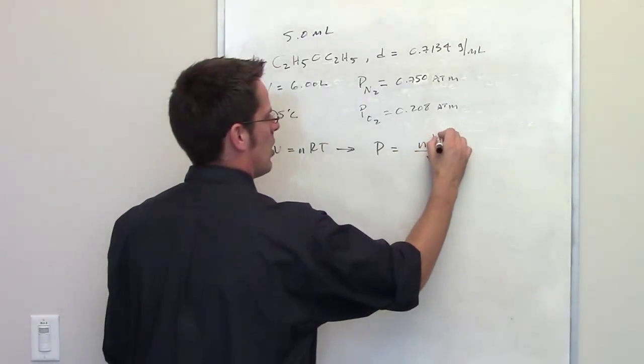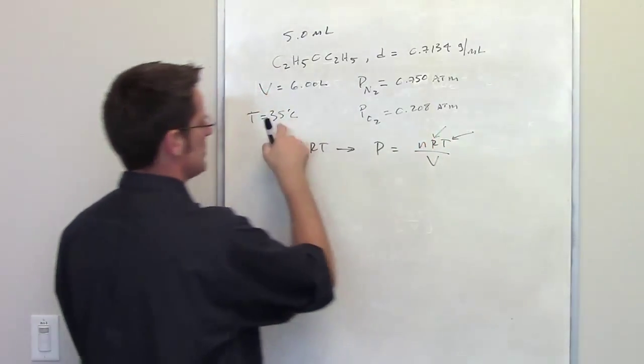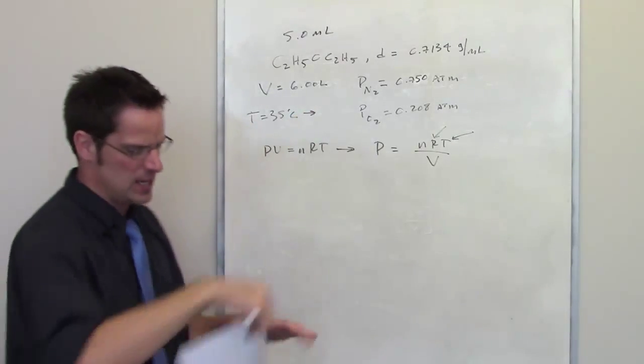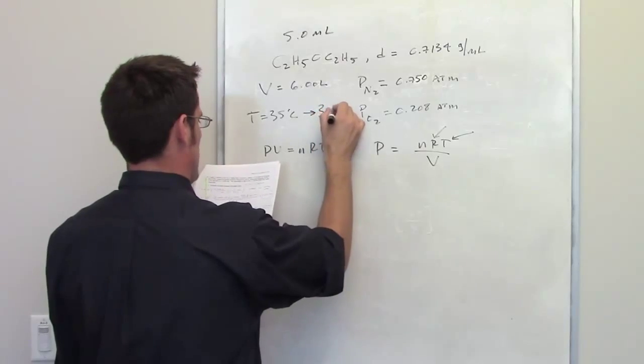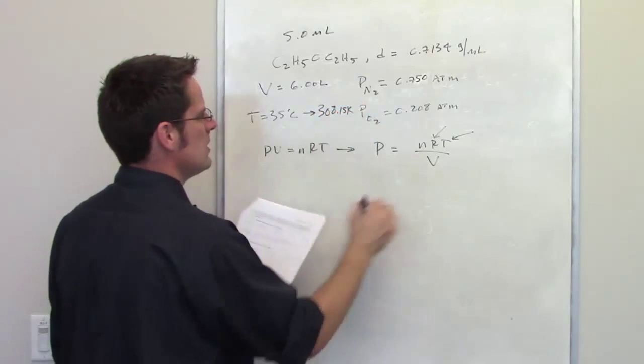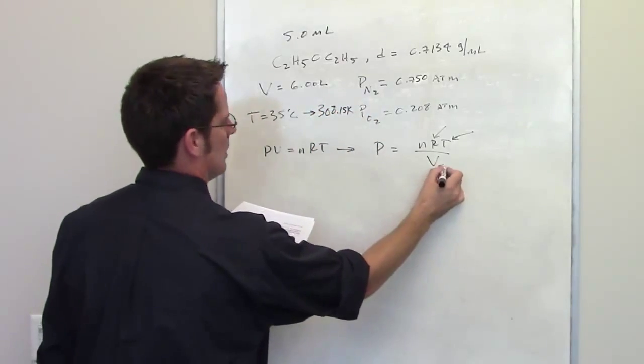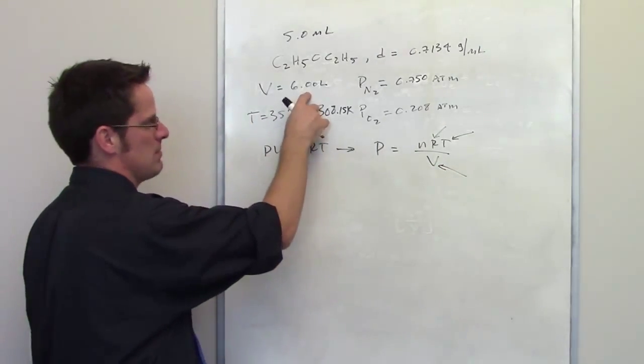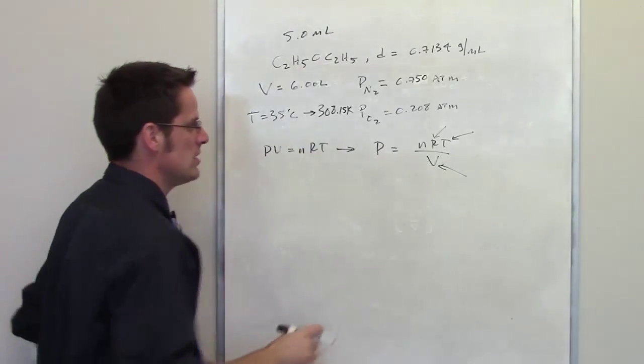We have R the ideal gas constant. We have T which is 35 degrees Celsius. We of course have to convert that to Kelvin by adding 273.15. That equals 308.15 kelvins. The volume is given to us of the chamber. This is not the volume of the diethyl ether thrown in there. It's the volume of the chamber. The chamber is 6 liters. So we have all of these values.